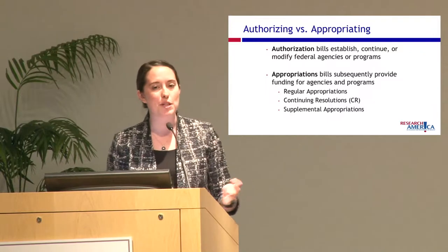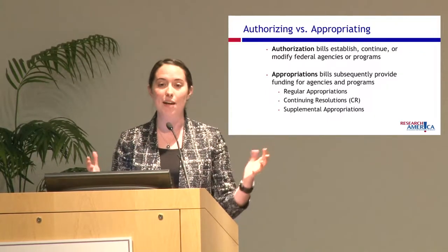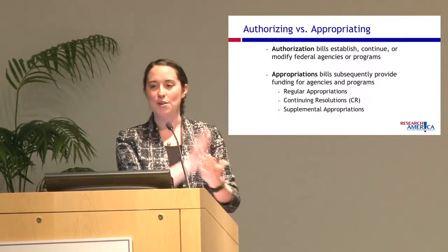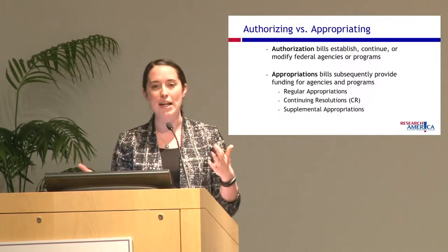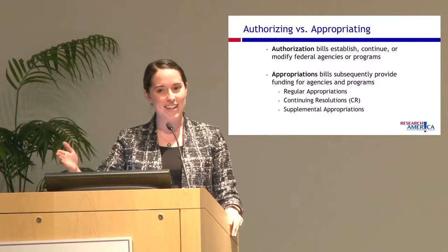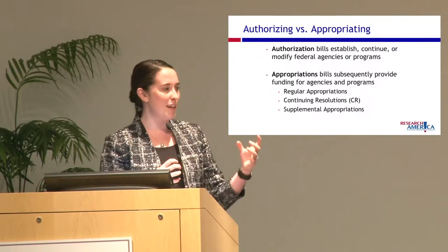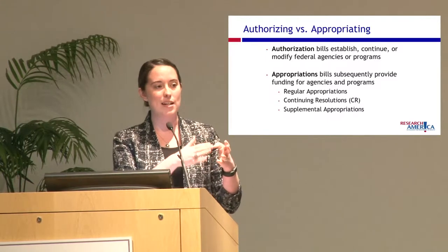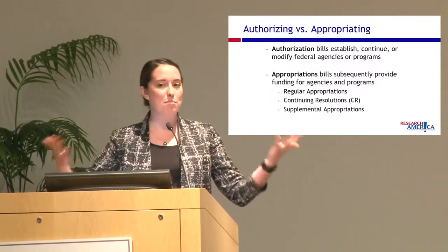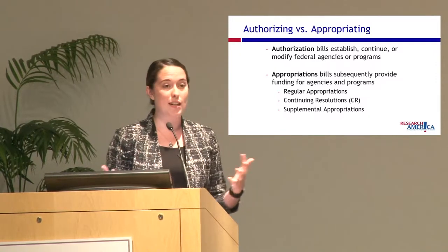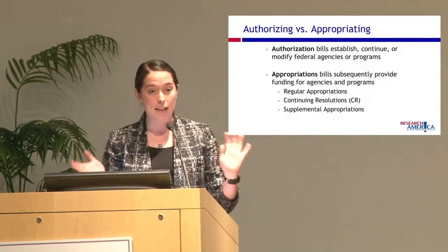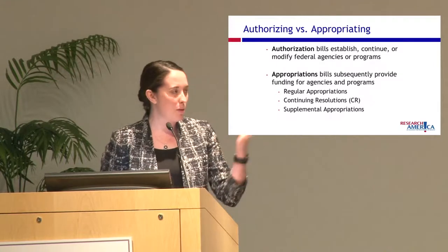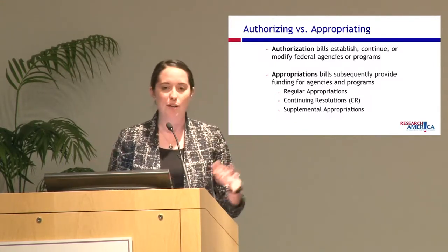There are a couple types of appropriations bills. For regular order, Congress takes a look each year and decides priorities and how to allocate money. If they miss the deadline without a signed bill, we'd have a continuing resolution — continuing to spend at the current year's funding level, meaning flat funding, no increase. That could happen this year, but we're working towards regular order. Supplemental bills are for emergencies like hurricanes — that's separate.